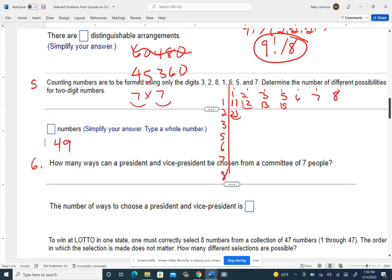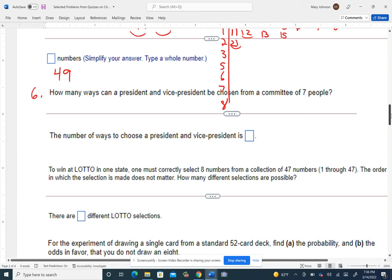Now problem number six asks, how many ways can a president and vice president be chosen from a committee of seven people? So you see that ordering idea, so that means that the order matters, so it's a permutation. You have seven to choose from, and you're picking a president and a vice president, so you're picking two out of that. So you just do that, seven, choose seven, and then find the NPR button and put in the two after that, and you wind up with 42, 42 ways.